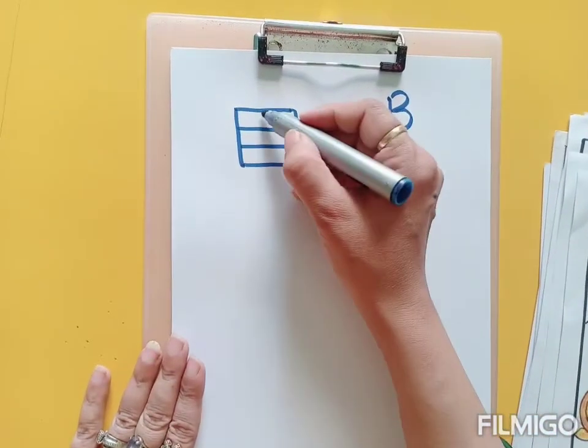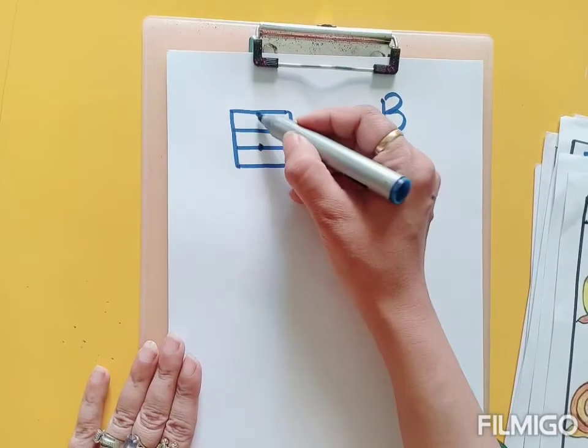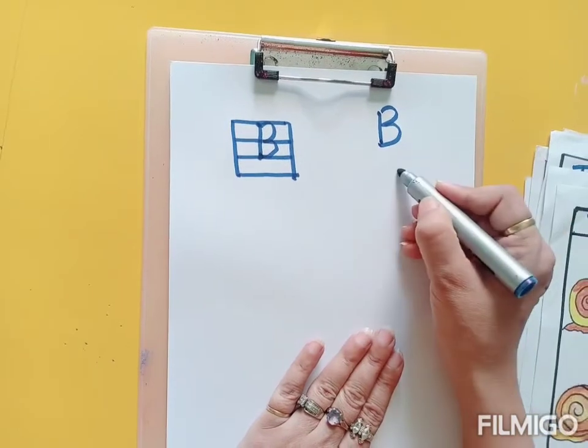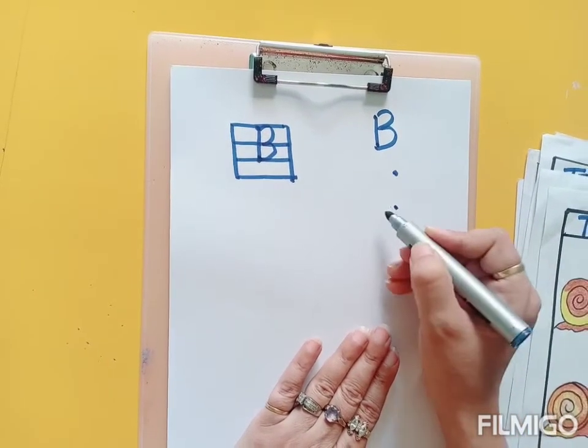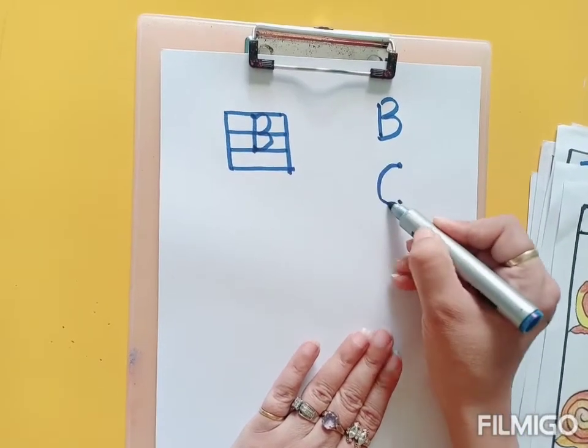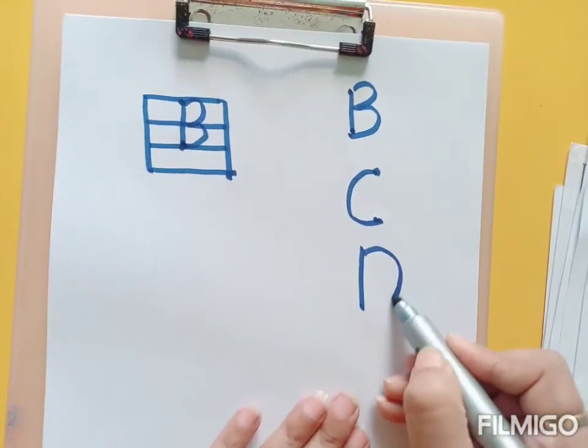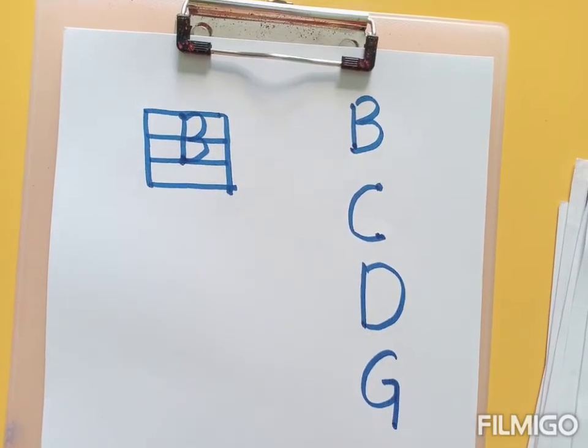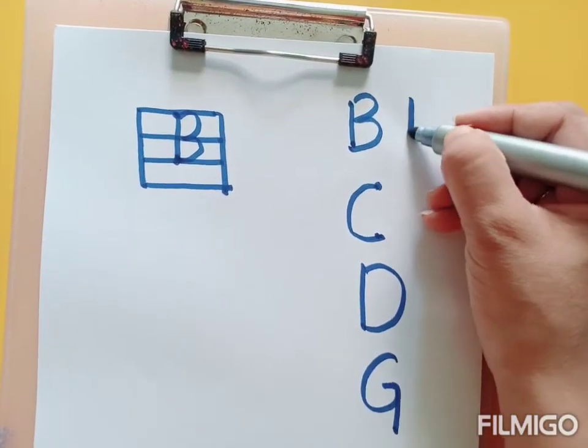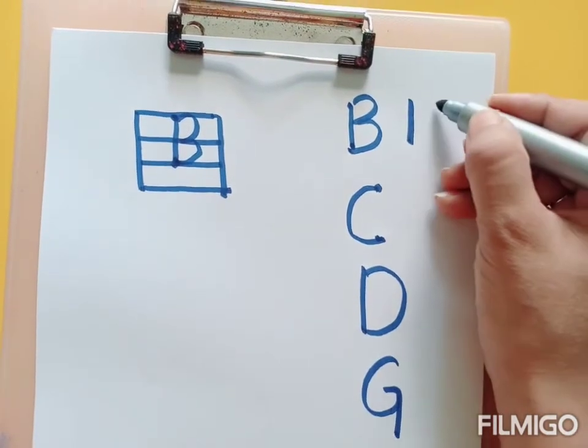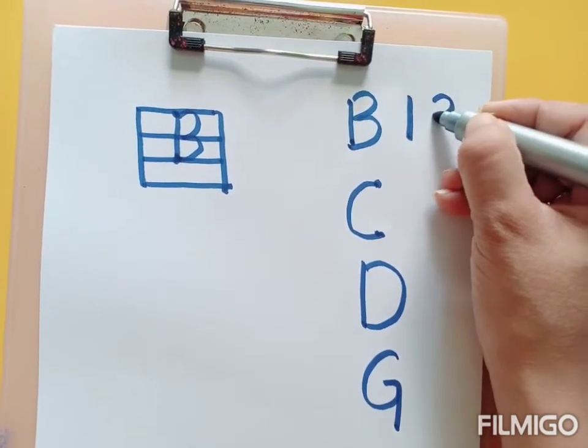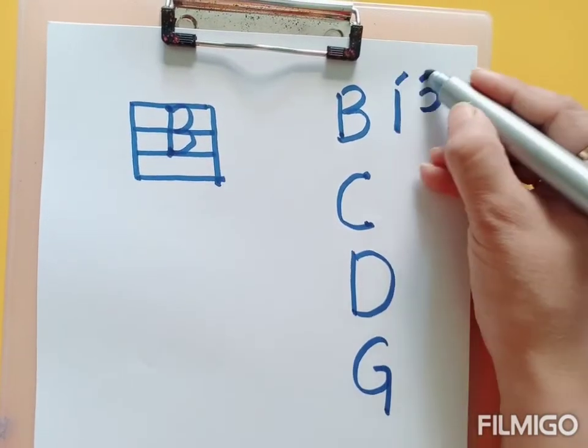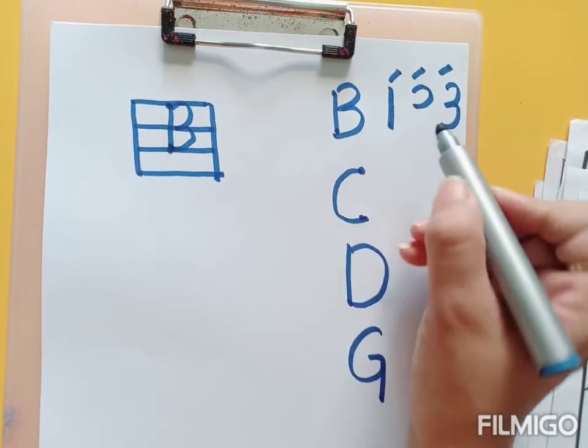write B alphabet, suppose. Then with the help of two dots, the child is going to write like this. So you will give a lot of practice like this. One, two, three stages complete. Complete B.